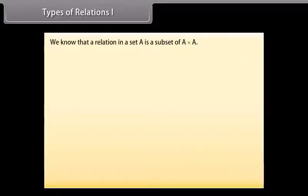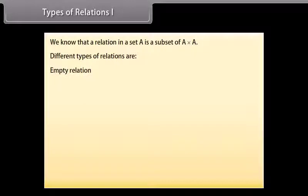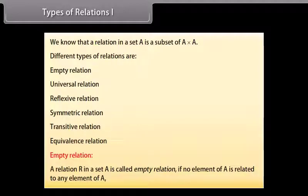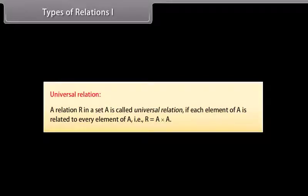Types of relations. We know that a relation in a set A is a subset of A cross A. Different types of relations are: empty relation, universal relation, reflexive relation, symmetric relation, transitive relation, and equivalence relation. Empty relation: a relation R in a set A is called empty relation if no element of A is related to any element of A. That is, R is equal to null set, which is a subset of A cross A. Universal relation: a relation R in a set A is called universal relation if each element of A is related to every element of A.